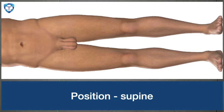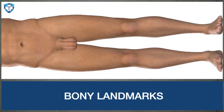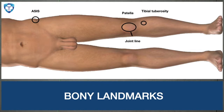We will keep the patient in supine position. We will prepare the entire leg from the inguinal area to the feet and we will not use any tourniquet. After painting and draping, we will mark the bony landmarks: the ASIS, patella, joint line, and tibial tuberosity.